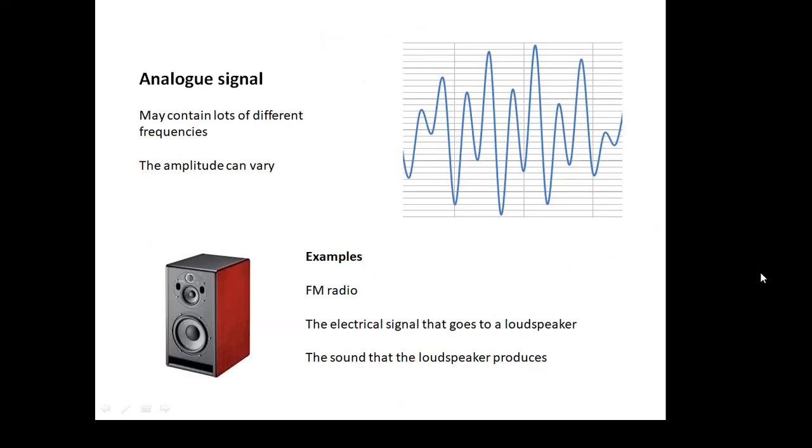An analog signal. If you looked at an analog signal with an oscilloscope, you'd see something like this. It might contain lots of different frequencies. Its amplitude can vary quite a bit. For example, FM radio, like normal, boring, old-fashioned radio. The electrical signal that goes to a loudspeaker is an analog signal. And the sound that the speaker produces is an analog signal. Lots of different frequencies. Amplitude all over the place.